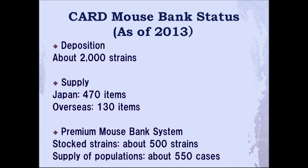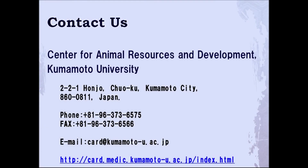I would now like to introduce CARD Mouse Bank's current status. As you can see, it is increasing at a steady pace. As of 2013, we have around 2,000 strains in deposition and have supplied 470 items to Japan and 130 items overseas. Furthermore, our premium mouse bank system stores about 500 strains in total and has supplied 550 different populations. Finally, please contact us using the contact information above with any inquiries. Thank you very much.